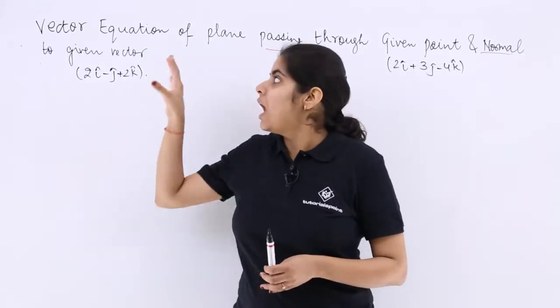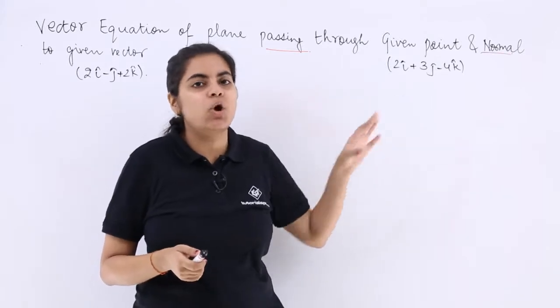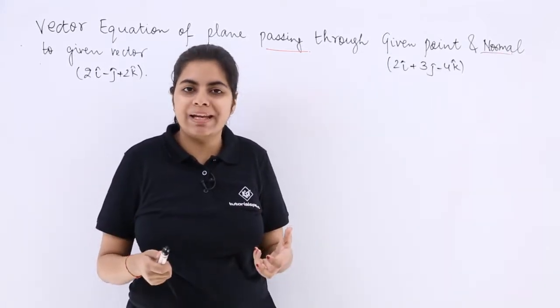We saw in the previous video how to derive the vector equation of a plane passing through a given point and normal to a given vector. In this video I have a question lined up for you.